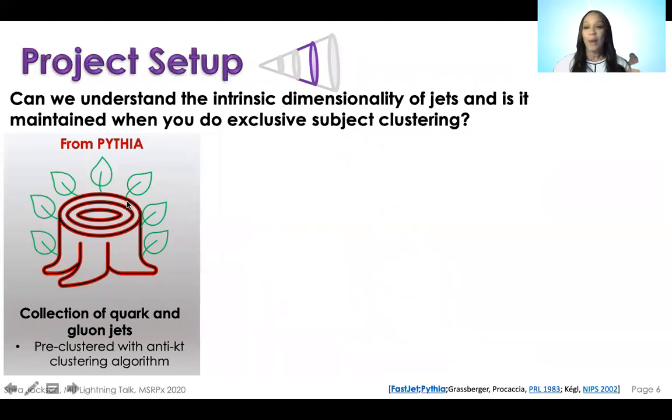The way we answer this question is we first import simulated data that's generated by this program Pythia. The data is quarks and gluons and these are already pre-clustered with an algorithm called anti-KT.